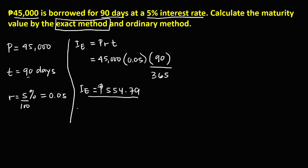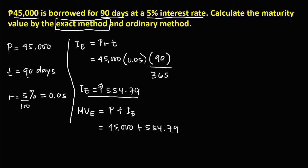Now we can find the maturity value using the exact method. The maturity value equals the principal plus the exact interest. Substituting the values: 45,000 plus 554.79. Therefore, the maturity value by the exact method equals 45,554.79 pesos.